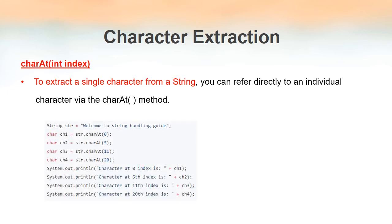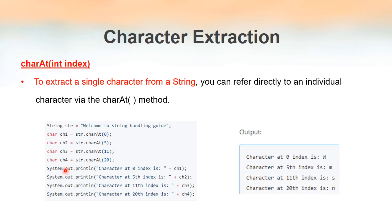In this example, we have created a string literal str with the value 'welcome to string handling guide'. The index always starts from zero, so index 0 is 'w', index 1 is 'e', index 2 is 'l', and so on. We use a char variable ch1 to hold the extracted character. Using charAt at index 0, 5, 11, and 20, we get the output: w, m, s, n on separate lines.